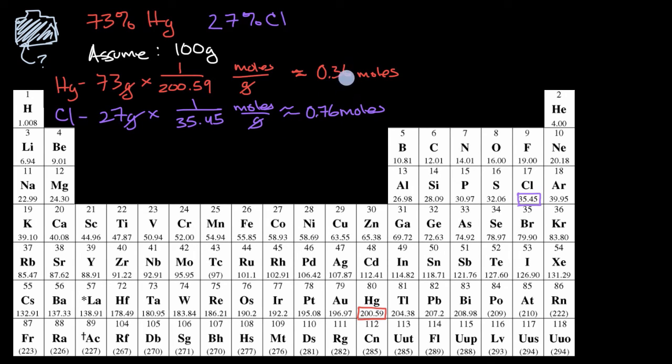And so what's the ratio here? Well, it looks like for every one mercury atom, there is roughly two chlorine atoms. If I take 2 times 0.36, it is 0.72, which is roughly close. It's not exact. But when you're doing this type of empirical analysis, you're not going to get exact results. And it's best to assume the simplest ratio that gets you pretty close.